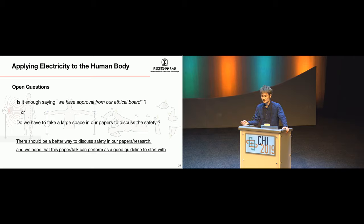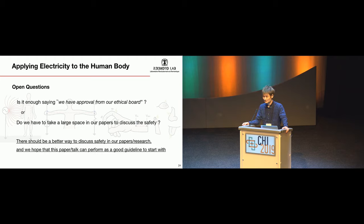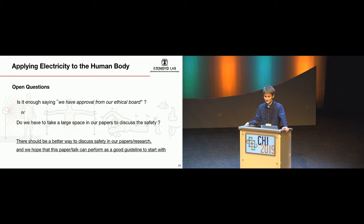This leads to another open question. When writing papers, is it really enough to just say we have approval from an ethical board? Ethical boards are not experts, so I'm not sure it's good to completely rely on them. In other cases, we can have a very long section discussing safety — but do we have to take up a large space in papers for that? We all have a limited amount of space. I don't have a complete answer — it's an open question — but we believe there should be a better way to discuss safety in papers, and we hope this work can serve as a good starting guideline.